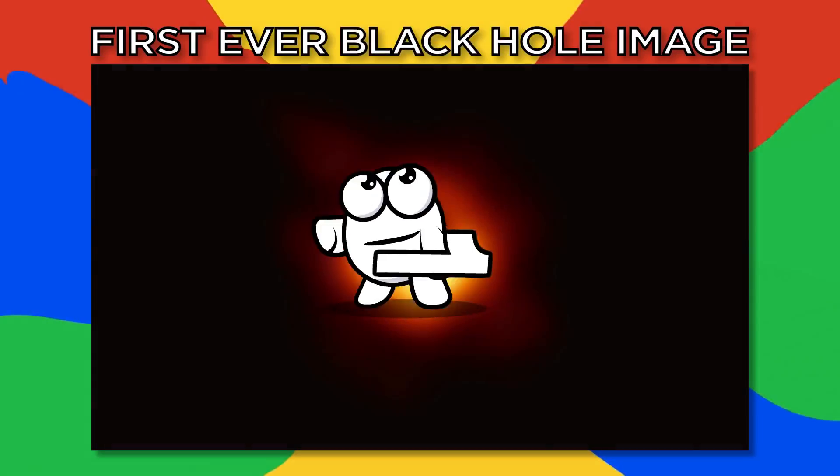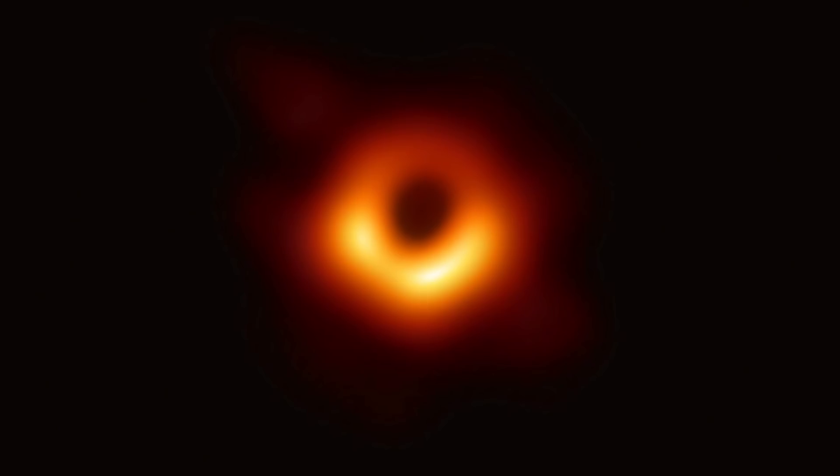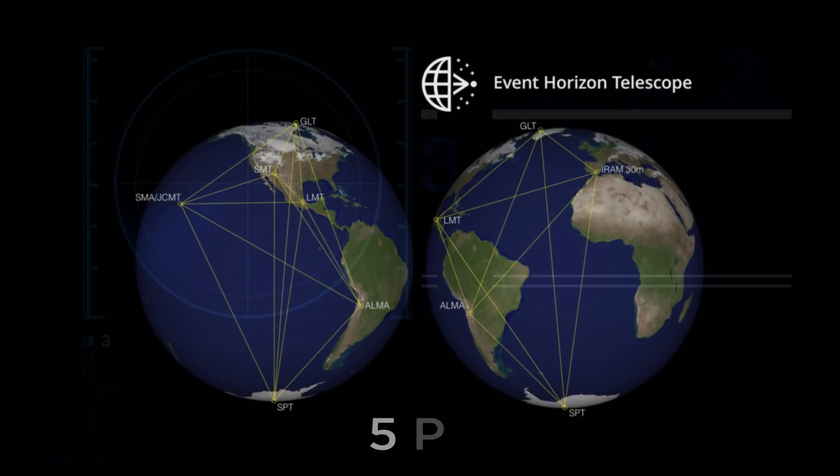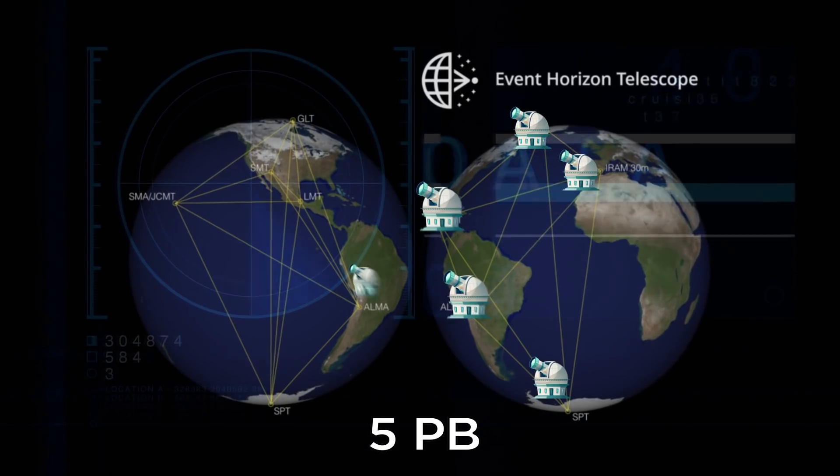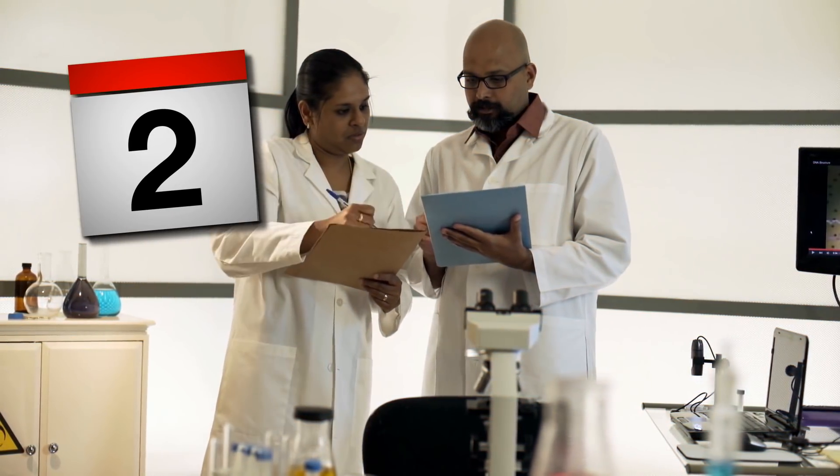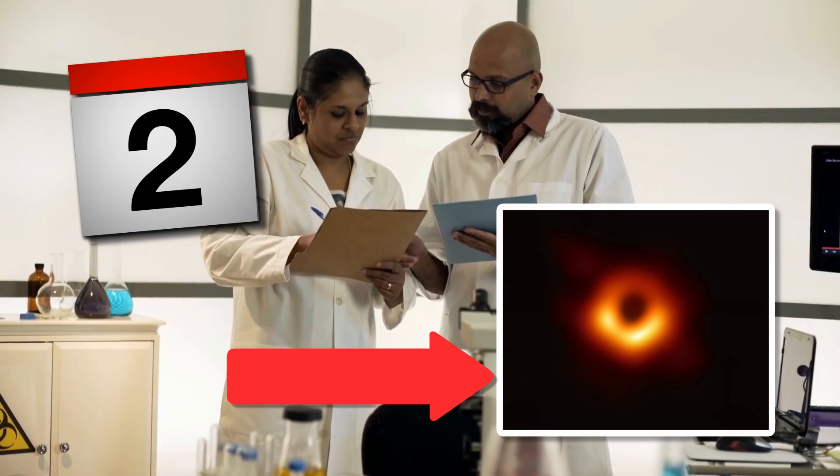Number one, first ever black hole image. Arguably the biggest space discovery in recent years happened last April 10th, with the help of more than 200 scientists. It was the culmination of the Event Horizon Telescope project, which used five petabytes of data from telescopes around the world. That's equal to 5,000 terabytes. It took two years, but the EHT finally managed to create the very first image of a supermassive black hole.